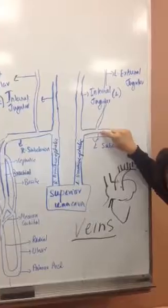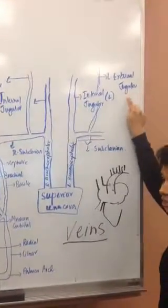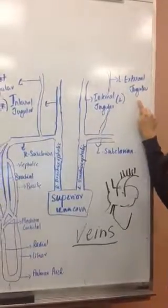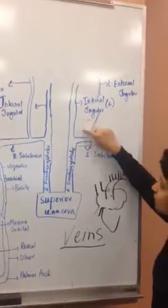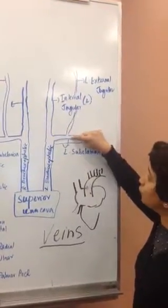So if you're confused as to whether it's internal or external jugular, check where it's coming from. If it's coming from your brachiocephalic, you know it is internal. If it's coming from off your subclavian, then you know it is external.